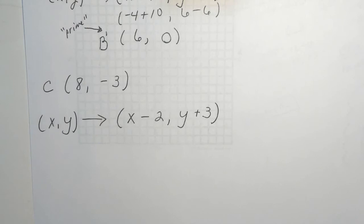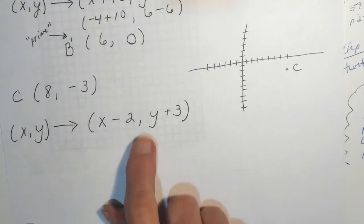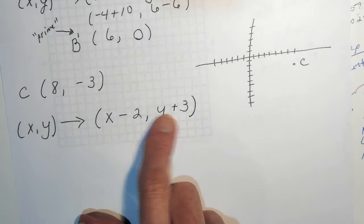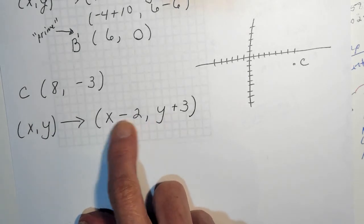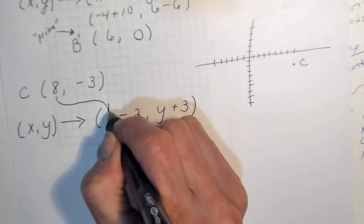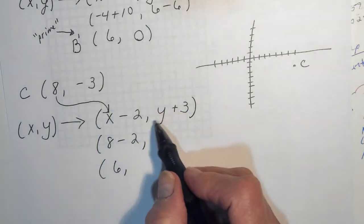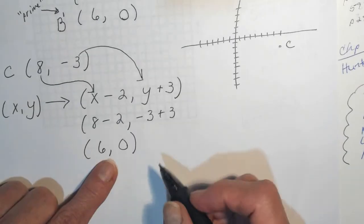Let's try this one. C is at 8, negative 3. Let's draw the point and then we'll translate it. Now let's look at our rule. It says take your point, move it following this rule. It says subtract 2 from your x value — 8 minus 2 is 6. Then take your y value and add 3, so negative 3 plus 3 is 0. We got 6, 0.